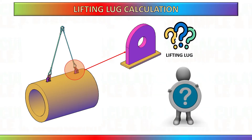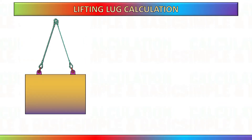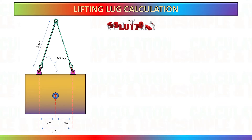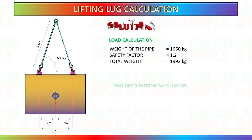We will explore the crucial aspects involved in designing and calculating the capacity of lifting lugs. As an example, we will hoist a cylindrical tube using two lifting lugs positioned on its upper surface. The pipe weighs 1660 kilograms, and we will include an additional safety factor of 1.2, giving a design weight of 1992 kilograms.